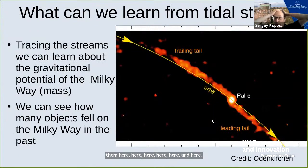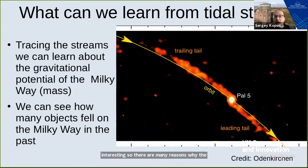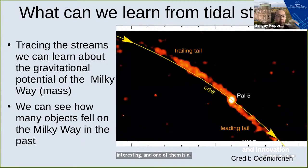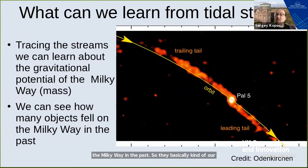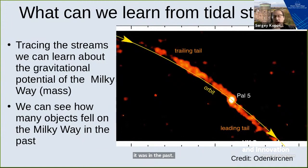One question you may want to ask is: why do we actually care, and why are these streams actually interesting? There are many reasons. First, the streams are telling us what objects were falling onto the Milky Way in the past — they're basically our view of the past history of the Milky Way. The object itself may have been disrupted, but we still see the stream and can understand what kind of object it was.